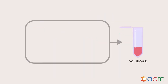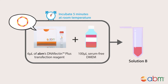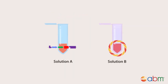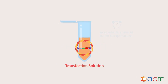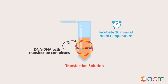For solution B, combine 6 microliters of ABM's DNA Fectin Plus transfection reagent with 100 microliters of serum-free DMEM. Incubate solution B for 5 minutes at room temperature. Now, combine solutions A and B into a single tube and incubate for 20 minutes at room temperature to allow formation of DNA and DNA Fectin transfection complexes. This is your transfection solution.